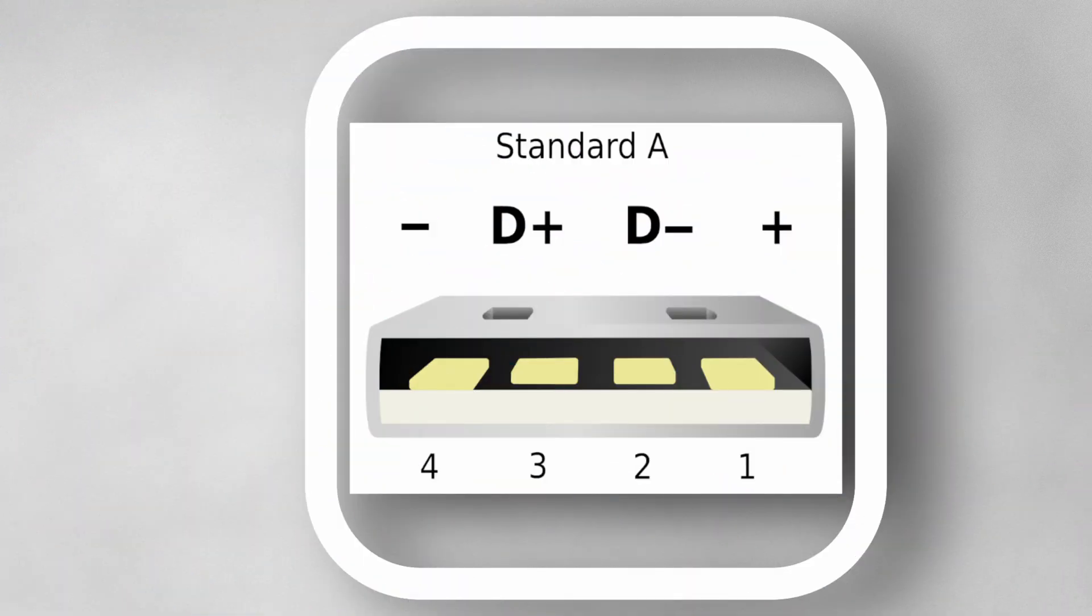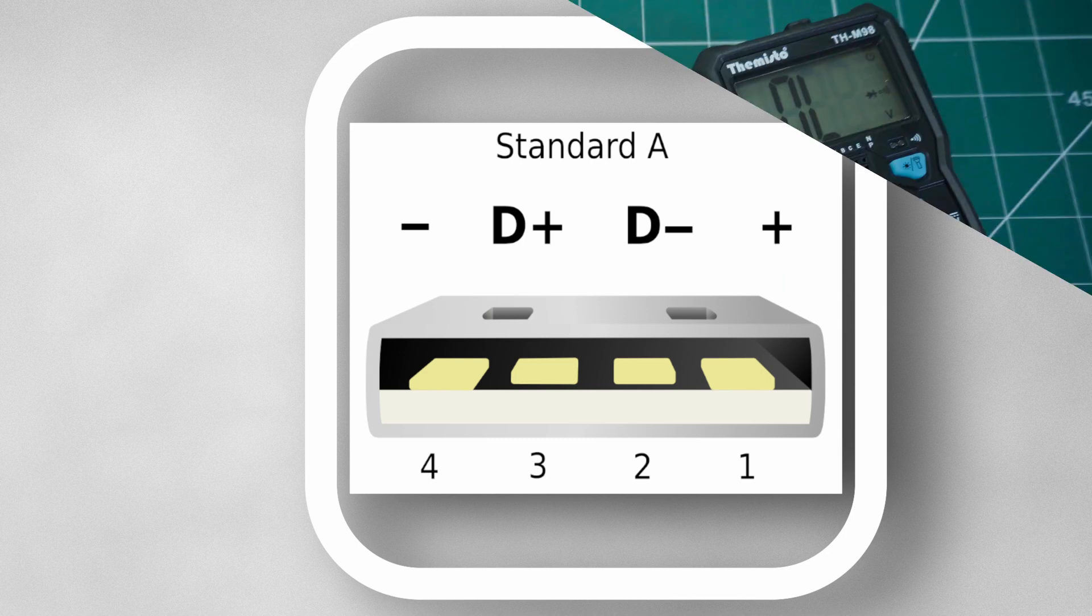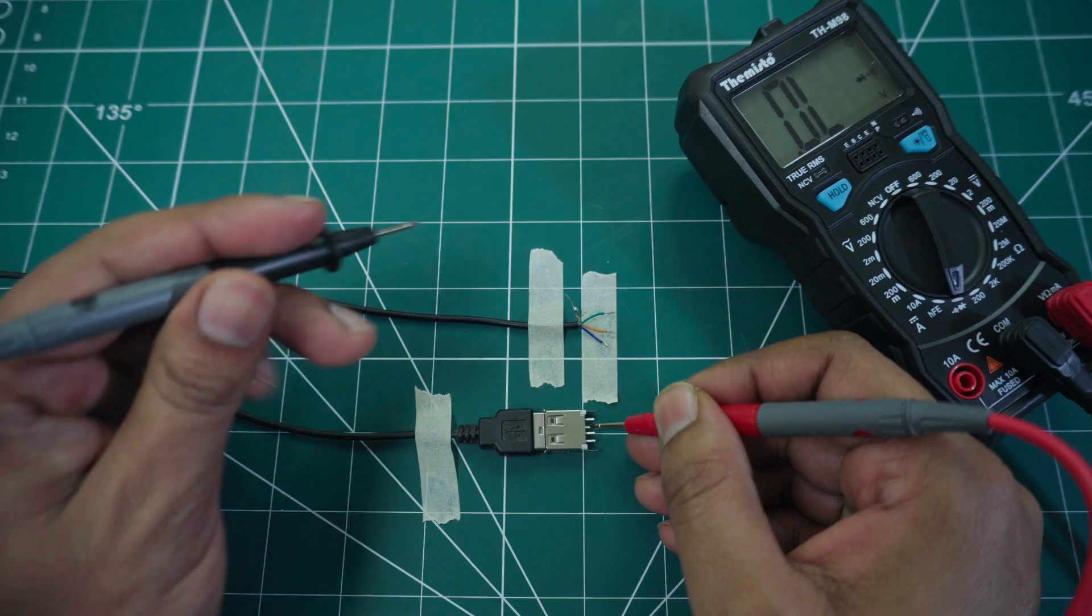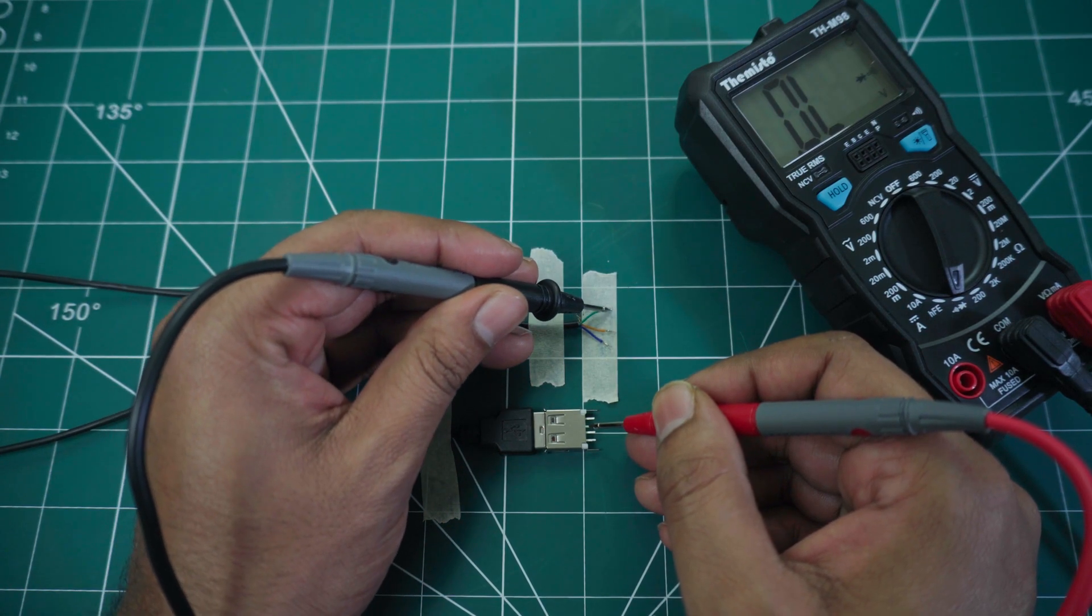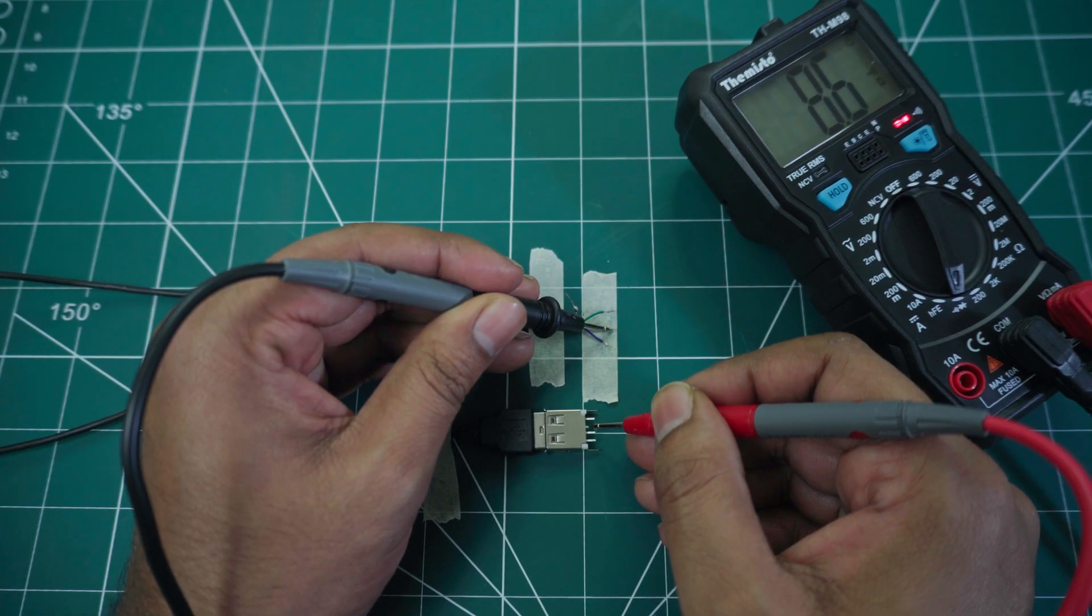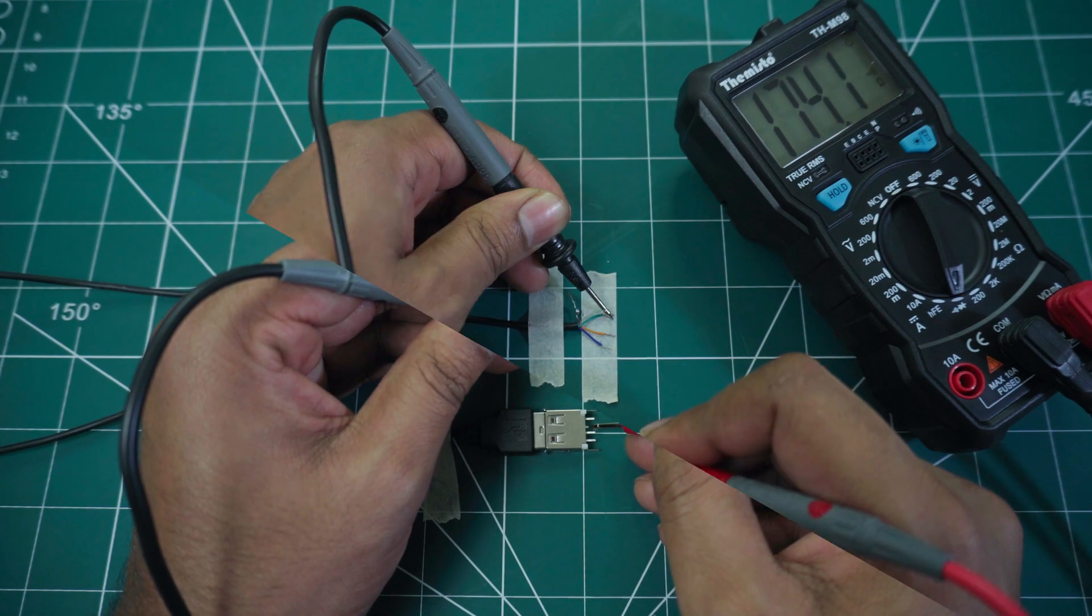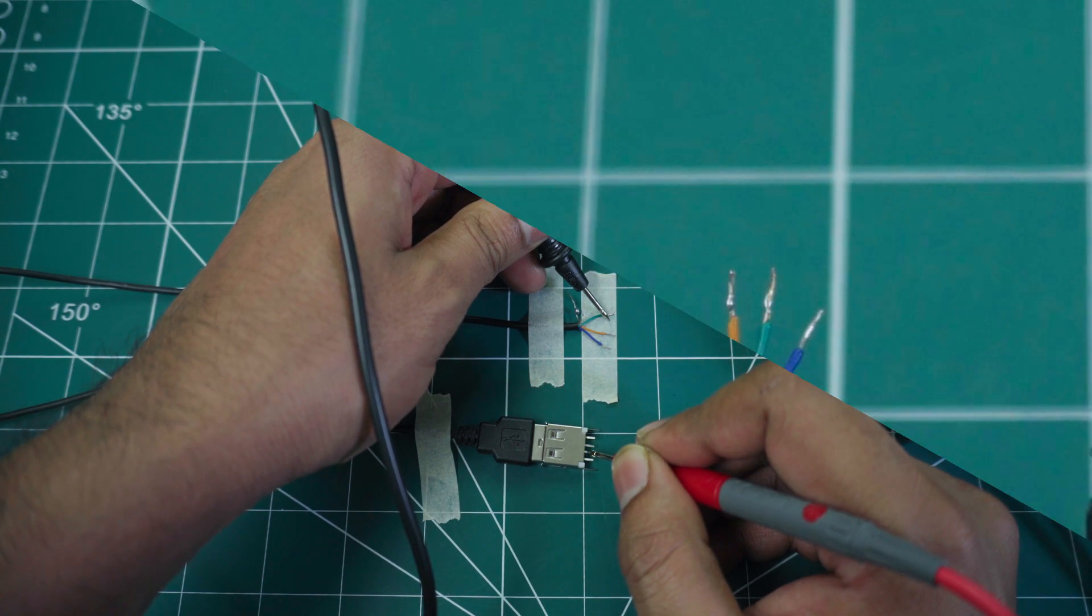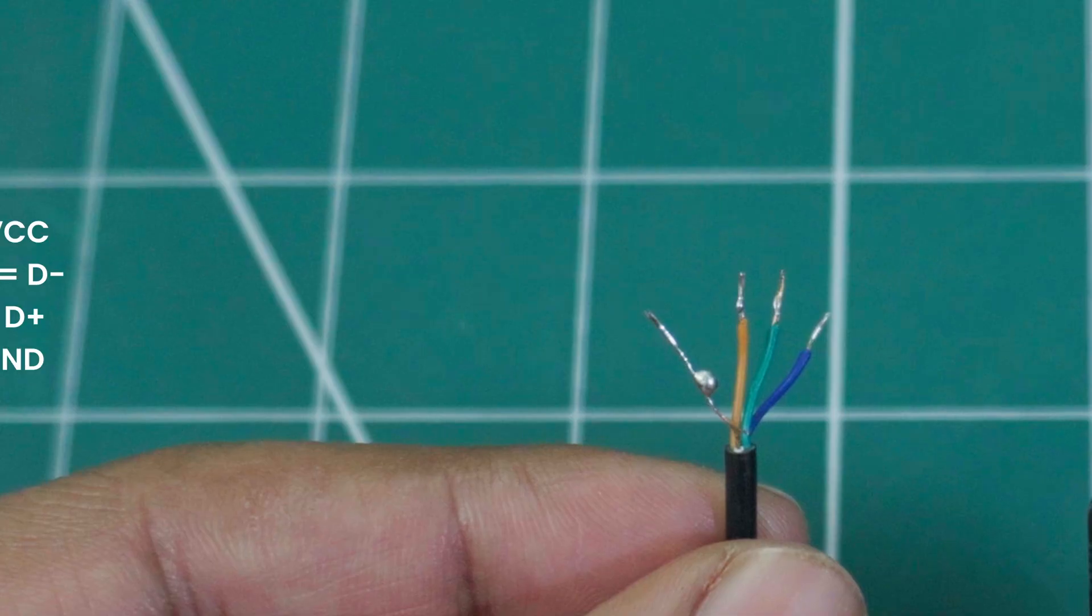As per the USB-A datasheet the data minus pin is next to the VCC pin. So, place one of the multimeter probes next to the VCC pin. Using the other probe, check for continuity to determine the data minus wire. The remaining pin is for the data plus wire. So, this is the pinout for this particular cable.